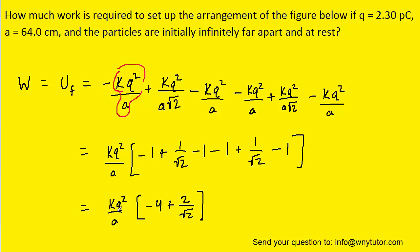And at this point, all we need to do is plug in the known values. We know that k is a constant. Q is given to us in picocoulombs, so we'll have to multiply it by 10 to the minus 12 to convert it into coulombs. And then a is given to us as well. We'll have to multiply that by 10 to the minus 2 to convert to meters.